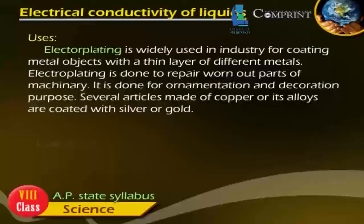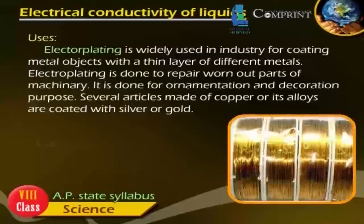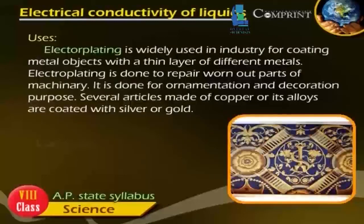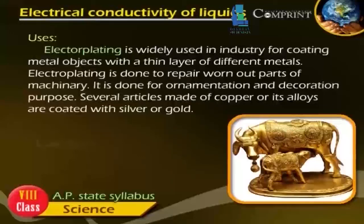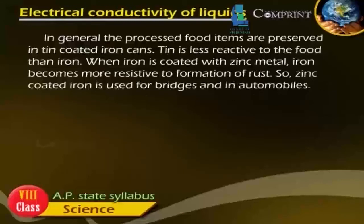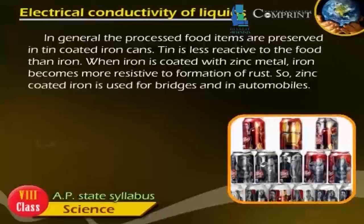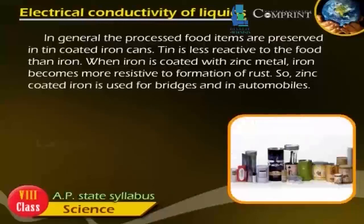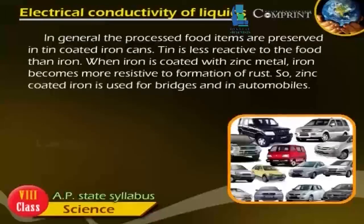Electroplating is used in industry for coating metal objects with a thin layer of different metals. It is done to repair worn-out parts of machinery and for ornamentation and decoration purposes. Several articles made of copper or its alloys are coated with silver or gold. Processed food items are preserved in tin-coated iron cans, as tin is less reactive than iron. When iron is coated with zinc metal, it becomes more resistant to rust formation, so zinc-coated iron is used for bridges and in automobiles.